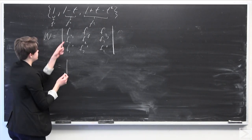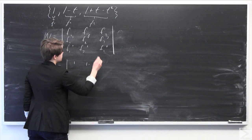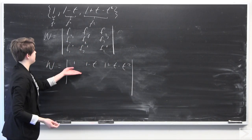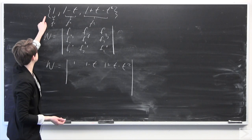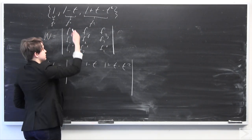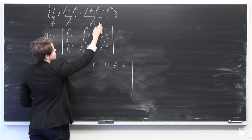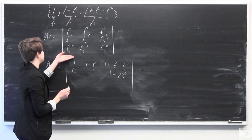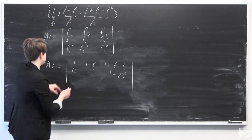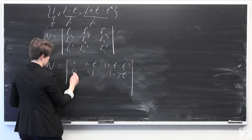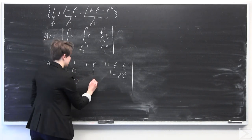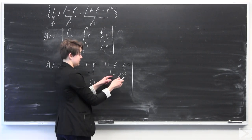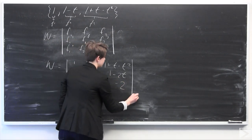I'm now going to calculate the Wronskian matrix for these functions. So f1 equals 1, f2 equals 1 minus t, and f3 equals 1 plus t minus t squared. The first derivative of f1 is 0, the first derivative of f2 is negative 1, and the first derivative of f3 is 1 minus 2t. The second derivatives are: 0 for f1, 0 for f2, and negative 2 for f3.